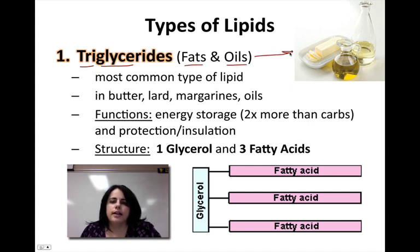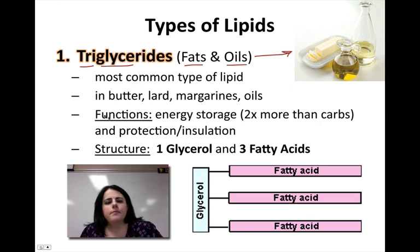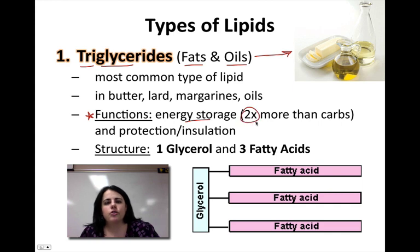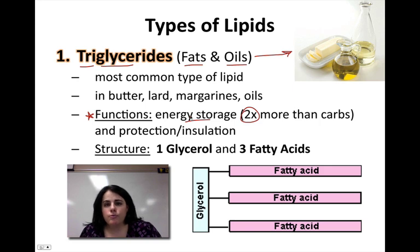These are the foods that you eat: the butters, the margarines, the oils, the Crisco — that's triglyceride. Their main function is energy storage. They're actually so good at it, they can store twice the amount of energy as carbohydrates. Our bodies love carbohydrates to break them down for energy, but triglycerides store much more energy — they're harder to break down, and your body likes glucose as its go-to for energy. But they can also be used in protection and insulation to keep you warm.